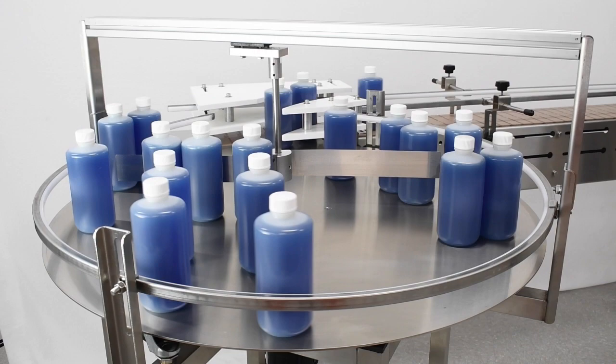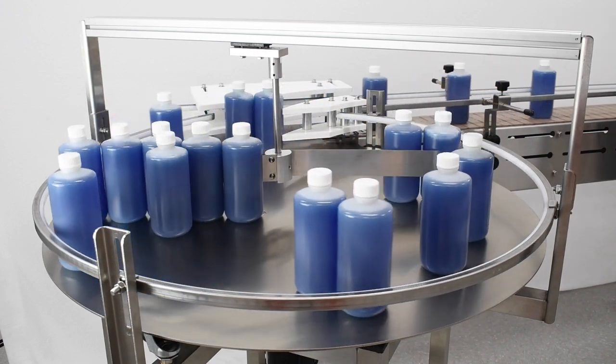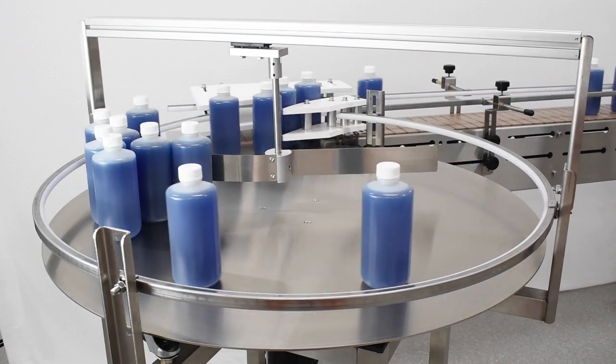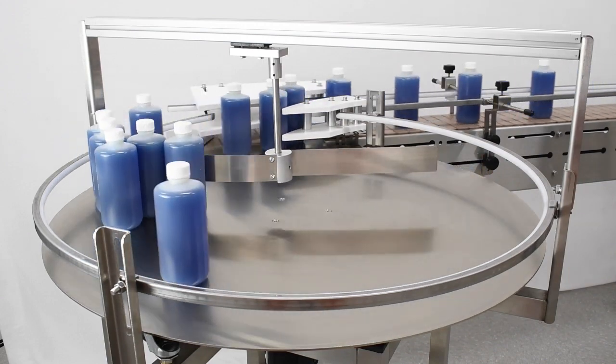Please see our other videos for information on how to attach your accumulation table to your conveyor. Here you can see an accumulation table, unscrambler, and conveyor working in tandem to create a seamless product line.